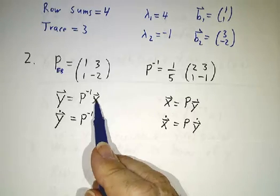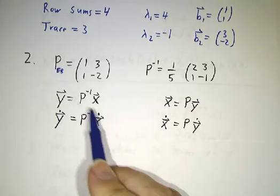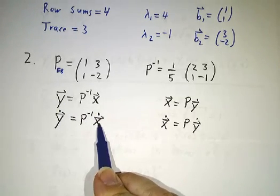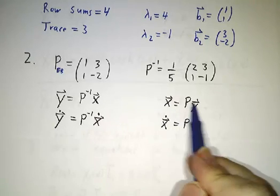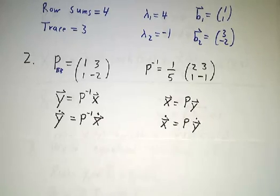So, you take a value of x, that'll give you a value of y. You take a derivative of x and multiply by P inverse, that gives you the derivative of y. Going the other direction, you multiply by P rather than by P inverse.